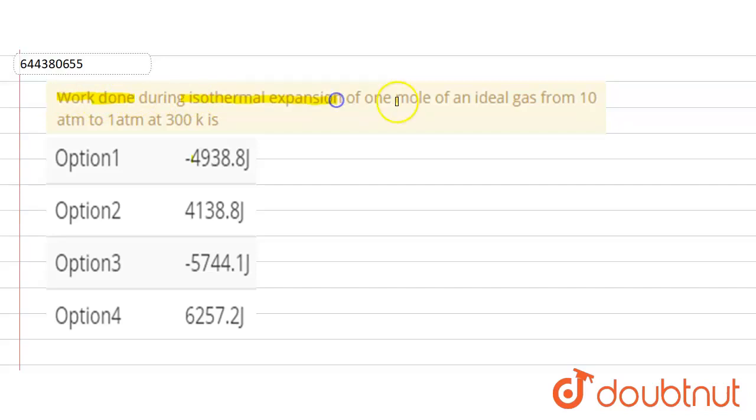Our question is: work done during isothermal expansion of one mole of an ideal gas from 10 atm to 1 atm at 300 Kelvin is...